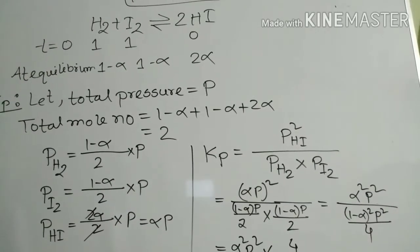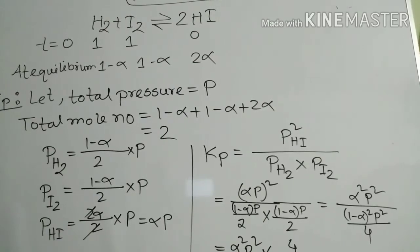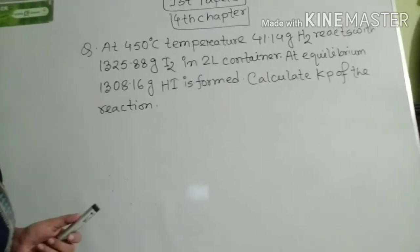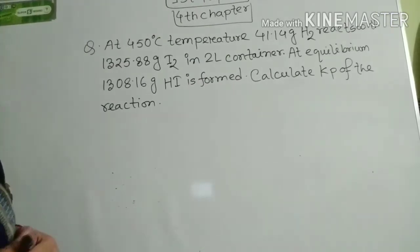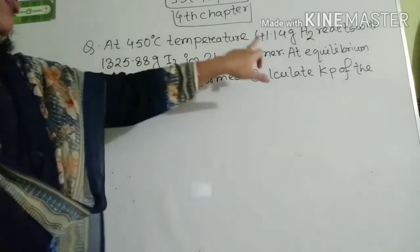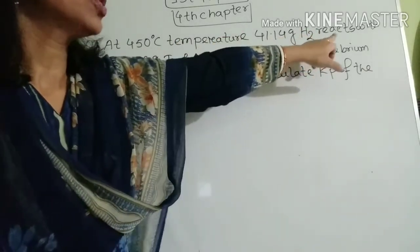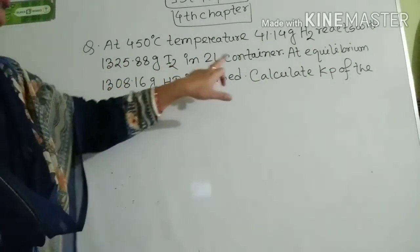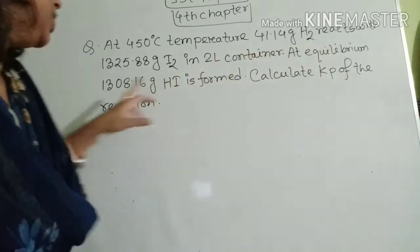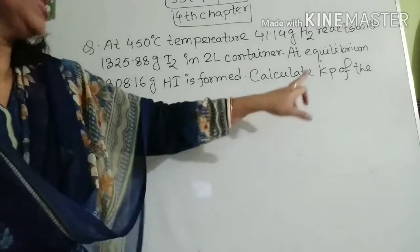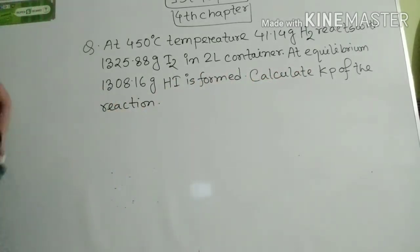Now I will discuss some math problems from this chapter. At 450°C, 41.14 grams of hydrogen reacts with 1325.88 grams of iodine in a 2-liter container. At equilibrium, 1308.16 grams of hydrogen iodide is formed. Calculate Kp of the reaction. Let's solve the math.